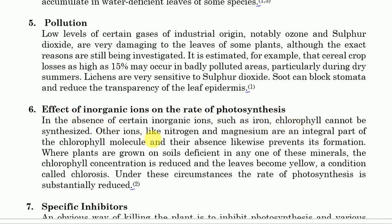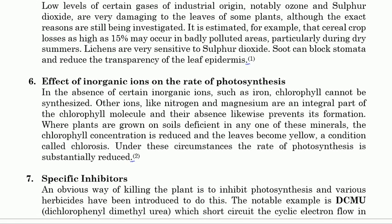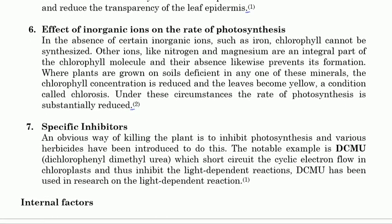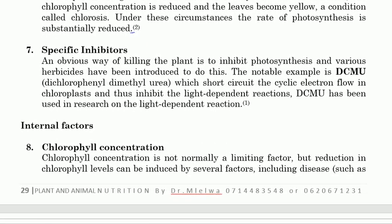Other ions such as nitrogen and magnesium are integral parts of the chlorophyll molecule, and their absence likewise prevents its formation. If a plant lacks these inorganic ions, it will be unable to synthesize chlorophyll and will therefore be unable to absorb light effectively.